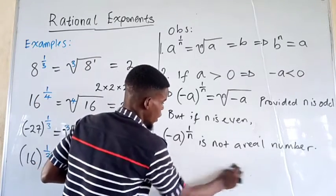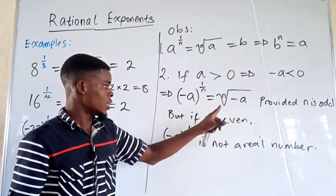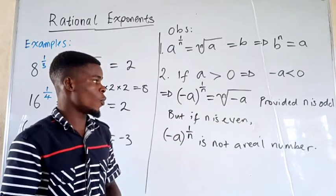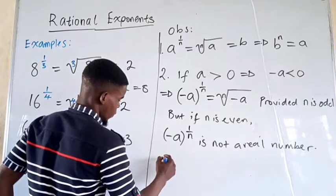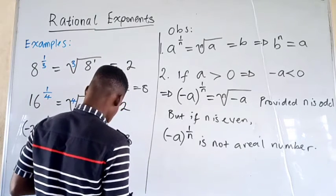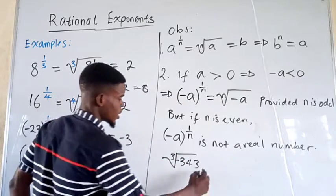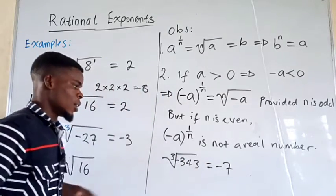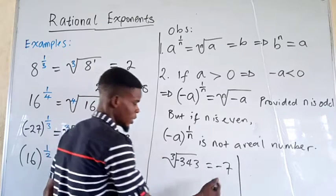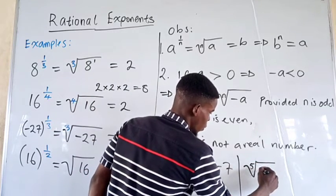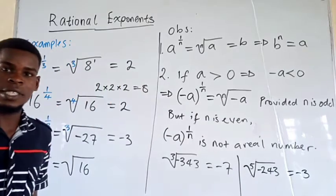So whenever we have that — if a is a positive number, and negative a will be a negative number — when we have this, it is not going to be a real number when n is an even number. But when n is an odd number, there is no problem. For example, if we talk about the cube root of negative 343, this gives us negative 7. So it works for odd indexes and negative numbers. Again, if we have the fifth root of negative 243, this is going to give us negative 3.